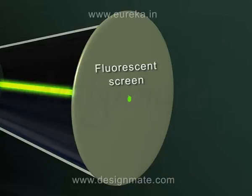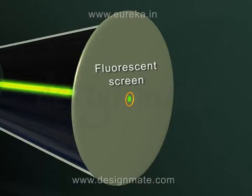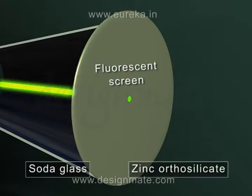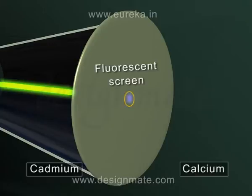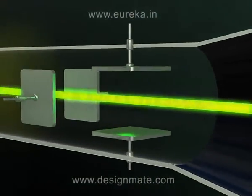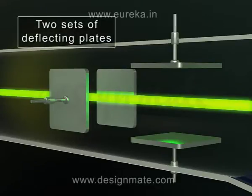Fluorescent Screen: This screen is coated with some fluorescent material called phosphor, on which the bright spot of the electron beam is obtained. The colour of light depends upon the nature of the fluorescent material. For example, the screen coated with soda glass or zinc orthosilicate gives off green light when an electron beam strikes it, while a cadmium and calcium coated screen gives off a bluish light.